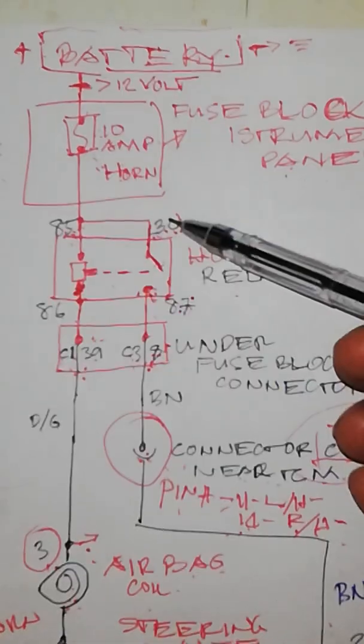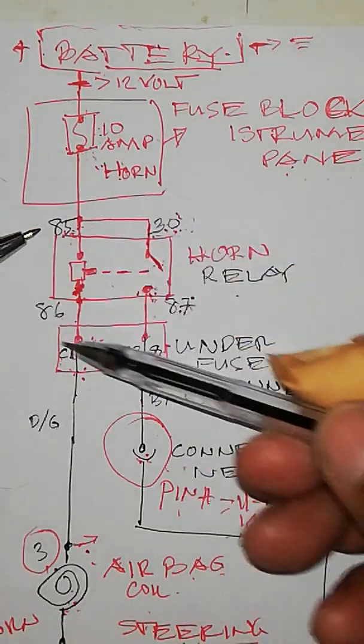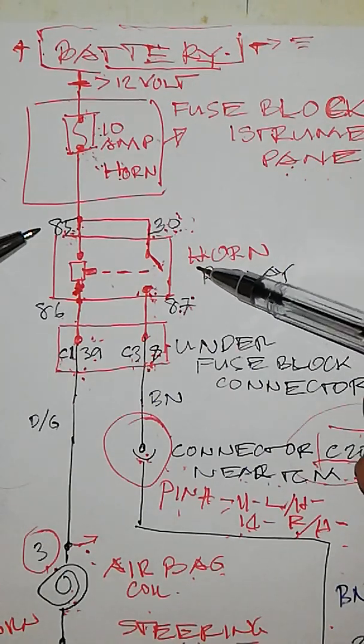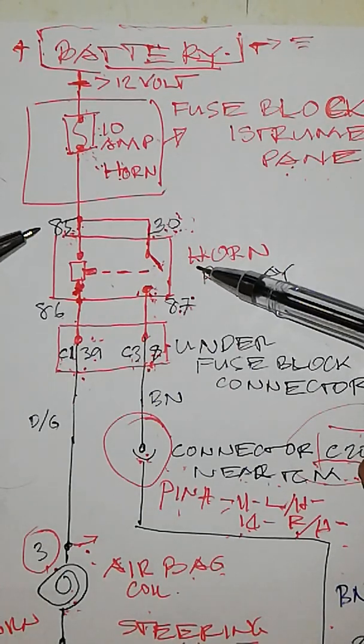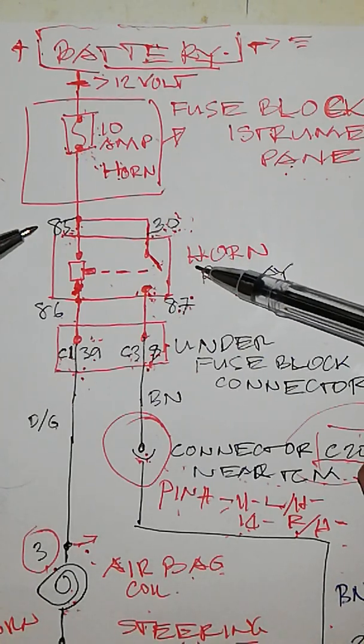Now we are on step number two. This is the relay of your horn. Where can you find the relay? The relay location is still inside the left side instrument panel, near the steering wheel.